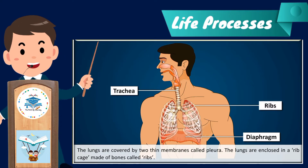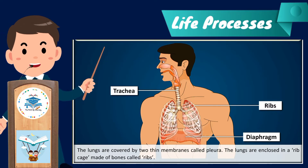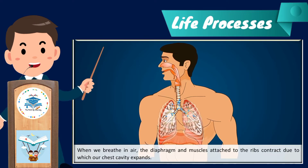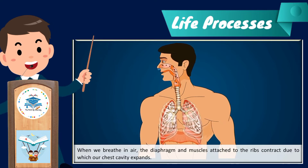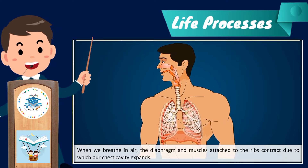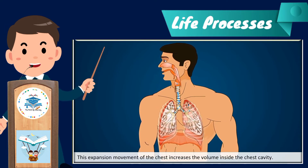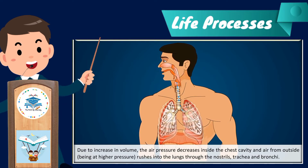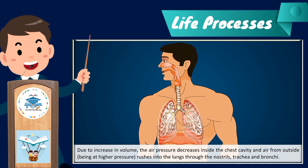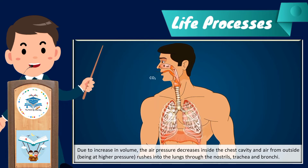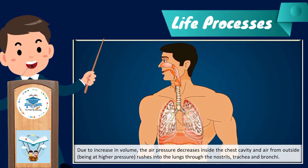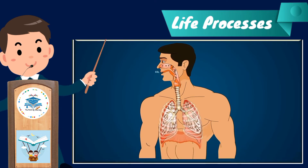The lungs are covered by two thin membranes called pleura and are enclosed in a rib cage made of bones called ribs. When we breathe in air, the diaphragm and muscles attached to the ribs contract, causing the chest cavity to expand. This expansion increases the volume inside the chest cavity, decreasing the air pressure, and air from outside rushes into the lungs through the nostrils, trachea, and bronchi.